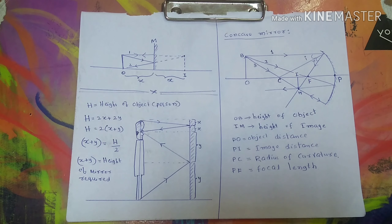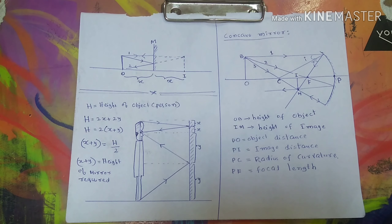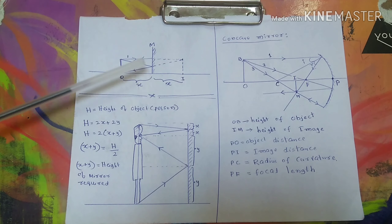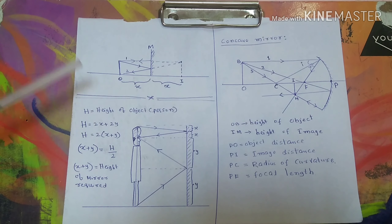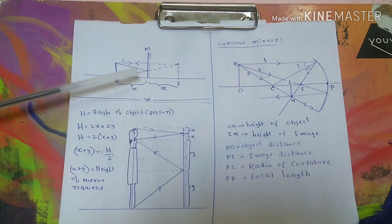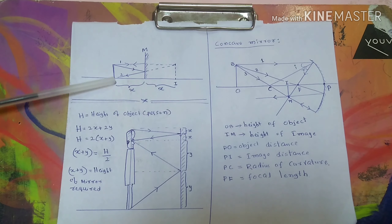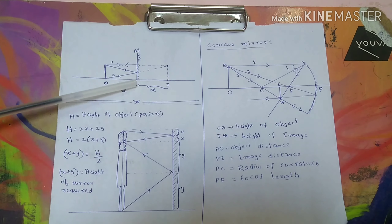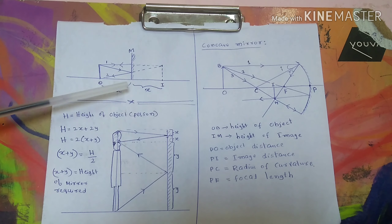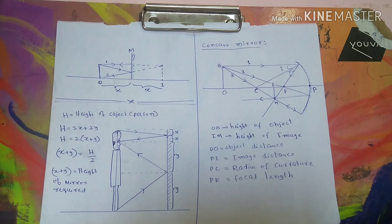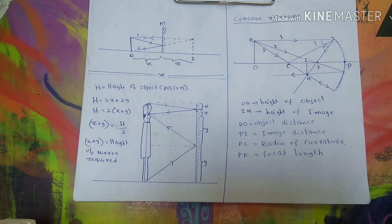This image is a virtual image — that means it cannot be caught on a screen. You see the image of the object inside the mirror; if you try to catch it, you cannot. The image is erect, and the size is the same as the object. If the object height is some value, the image height is also the same. The distance from the mirror to the object is x, and the distance of the image from the mirror is also x.